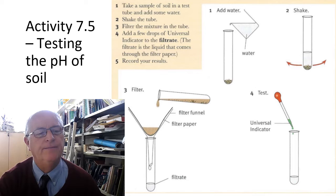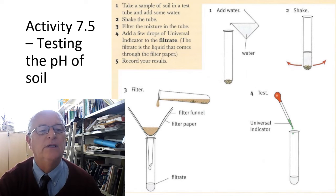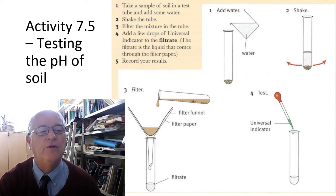Here's an activity testing the pH of soil. A farmer may need to do this to find out whether the soil is acidic, neutral or alkaline. First, take a sample of soil in a test tube and add some water, which will dissolve the acid, alkali, or whatever is present in the soil. Shake the test tube and then filter the mixture into another tube. Then add a few drops of universal indicator to the filtrate — that's the clear solution that went through the filter paper — and record your results.